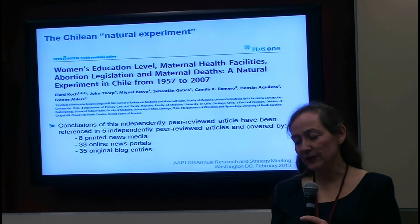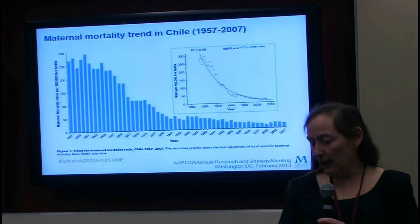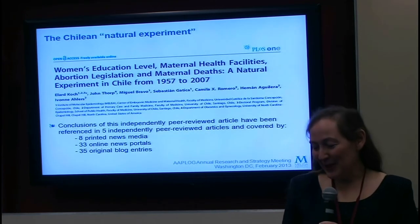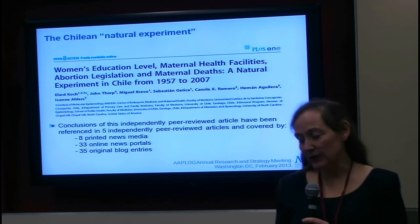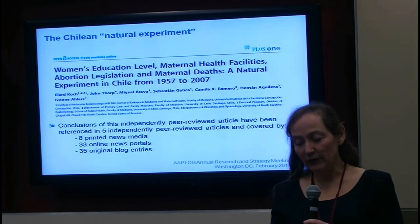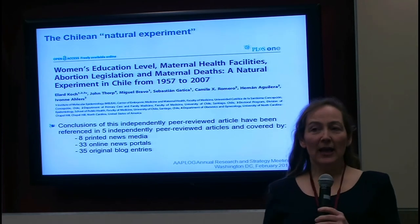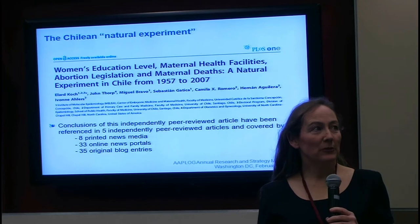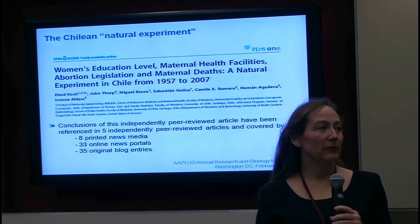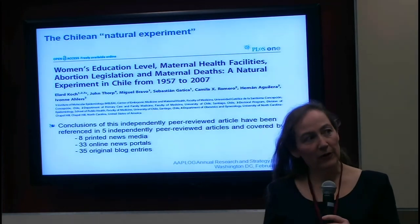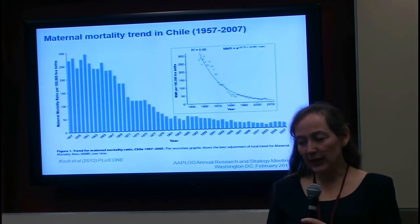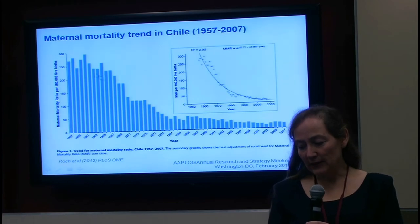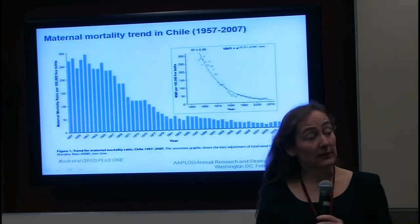The paper — titled 'Women's Education Level, Maternal Health Facilities, Abortion Legislation, and Maternal Deaths' — is an independently peer-reviewed article referenced in five other peer-reviewed articles and covered by eight printed news media, 33 online news portals, and 35 original blog entries. As a colleague noted, most papers are read by only three people — those who write, review, and publish them — making this a very important paper. What they showed was that the trend of maternal mortality in Chile from 1957 to 2007 has been one of continuous, well-documented progress.